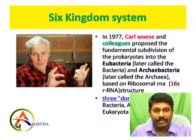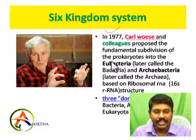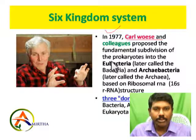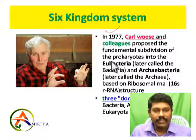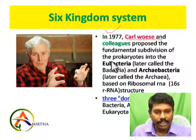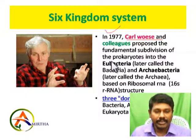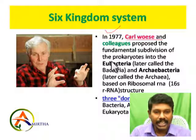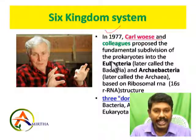In the six kingdom concept, it was proposed by Carl Woese in 1977, along with colleagues. Because of the advent of microscopes — compound microscopes by Anton van Leeuwenhoek and later the electron microscope — the cell structure including cytoplasm, nucleus, and other components were studied in detail and advanced in science.